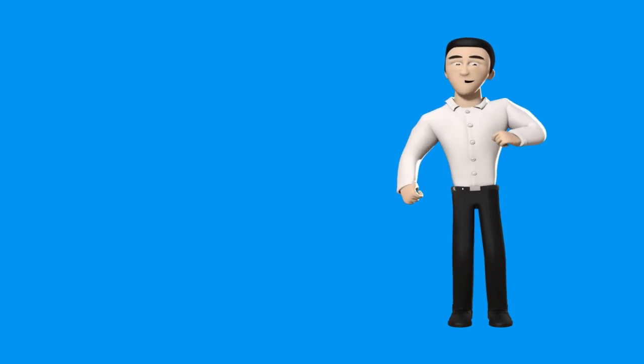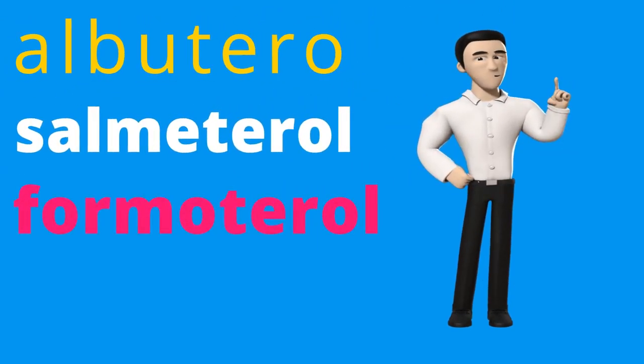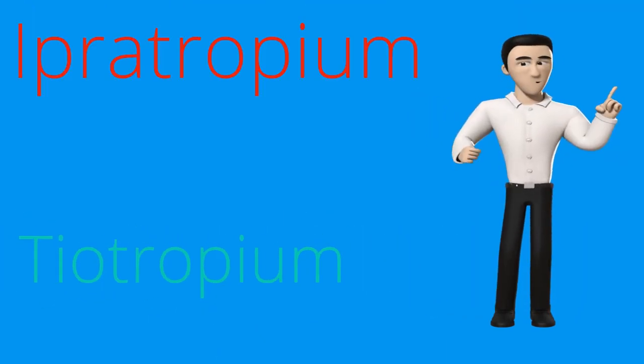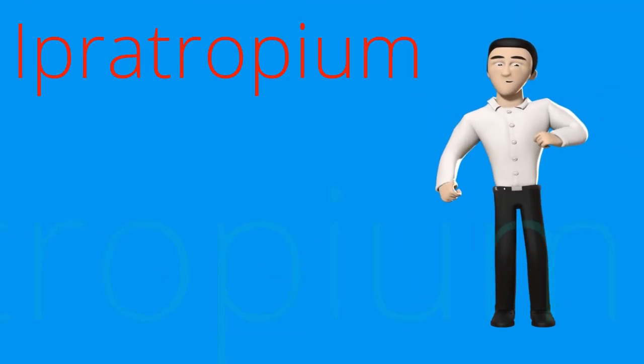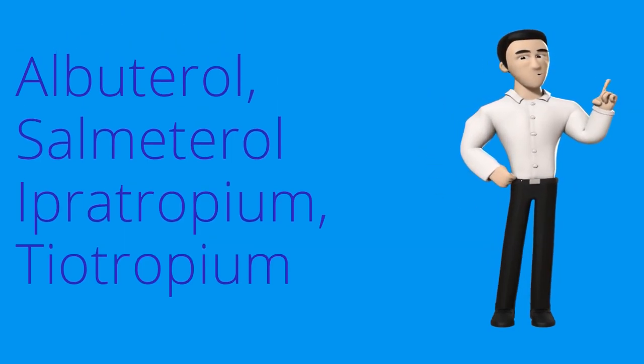Some commonly used inhaled bronchodilators include albuterol, salmeterol, formoterol, ipratropium, and tiotropium. These medications can be prescribed as short-acting or long-acting bronchodilators, depending on the severity and frequency of symptoms.